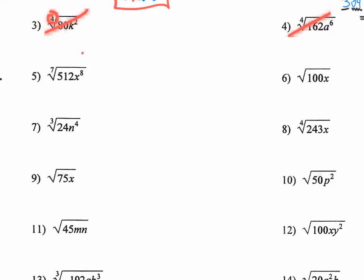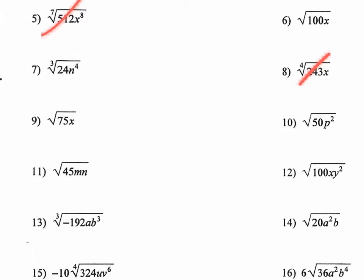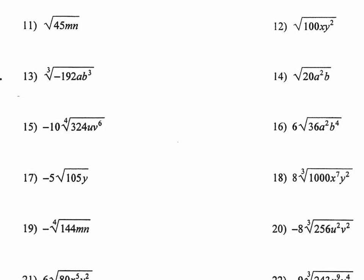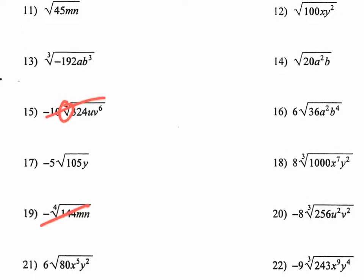Number 5, don't do it — that's the 7th root, we're not doing that yet. Number 6, cross out the ones with the 4th root or the 7th root. Number 8 has the 4th root. The rest — cube roots, square roots — we can do those. Number 15 has the 4th root, skip it. Number 19 has the 4th root, skip that one too.